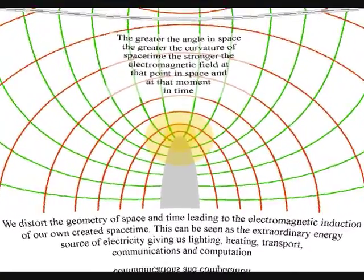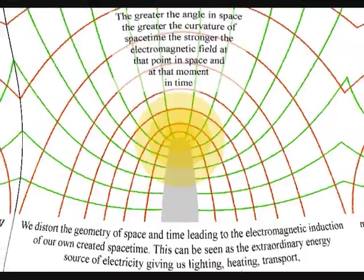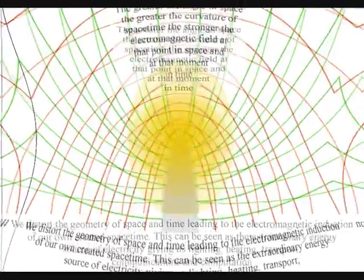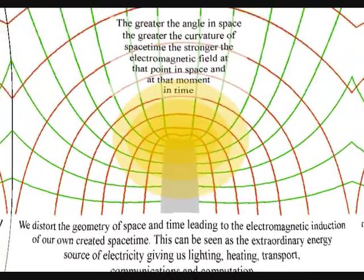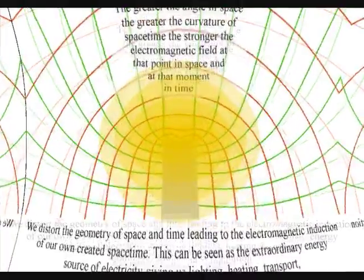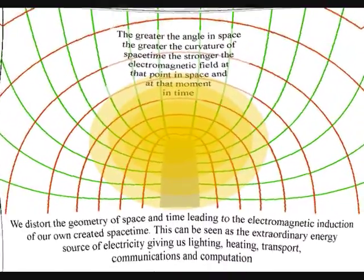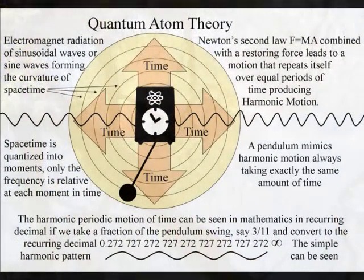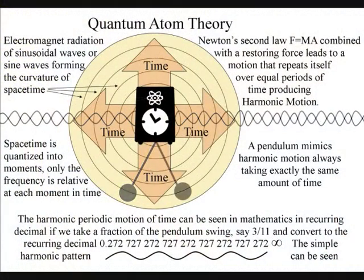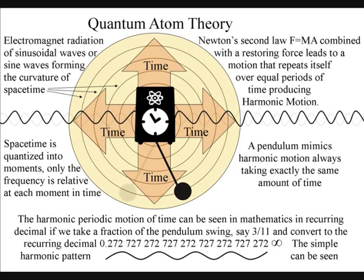In quantum atom theory, the electromagnetic spectrum is a continuous flow of energy. Therefore light is a wave, and it is time that is quantized. It is because of the wave nature of electromagnetic radiation that we can't achieve absolute zero. Waves by their nature have to move. The quantum of quantum physics is the variable of time forming the geometry and symmetry of space-time.